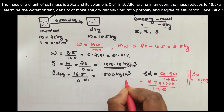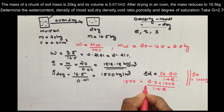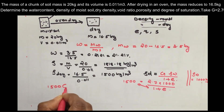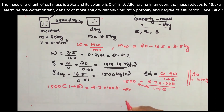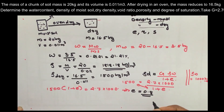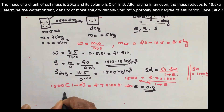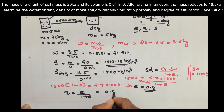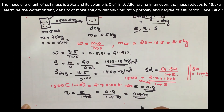Cross multiplying: 1500 into (1 plus e) equals 2.7 into 1000, giving 1 plus e equals 1.8, so e equals 0.8. The porosity value n equals e divided by (1 plus e), which gives 0.8 divided by 1.8, equal to 0.444.